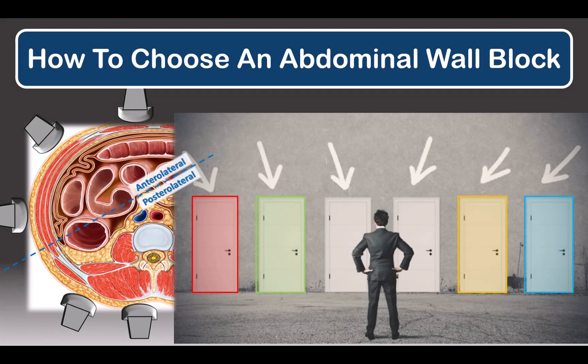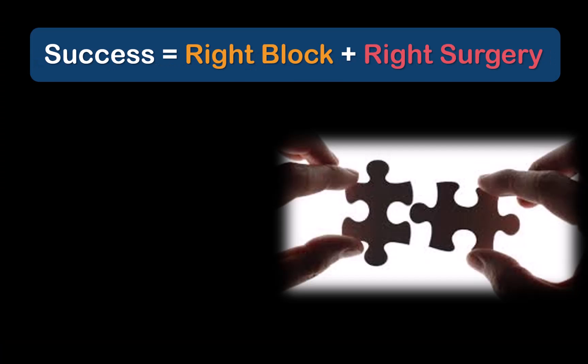When it comes to abdominal wall blocks, we're confronted by the paradox of choice. There are multiple locations and block techniques that have been described. What we need to do is match the block technique to the surgery in terms of what the surgery involves and what the block is expected to cover.